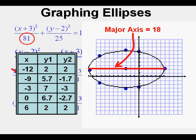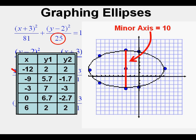Since a² is 81, a is 9, or half the major axis, so the width of this horizontal ellipse is 2 times 9, or 18 units. And since b² is 25, b is 5, or half the minor axis, so the height of this horizontal ellipse is 2 times 5, or 10 units.